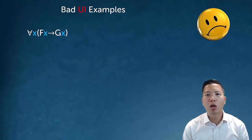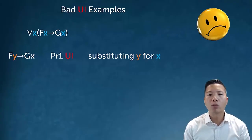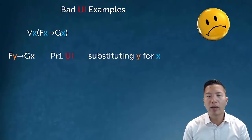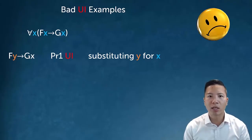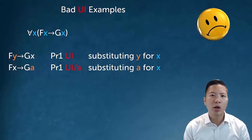Bad UI examples are more illuminating about how the rule works. From 'for all x, Fx arrow Gx,' I tried to UI and get 'Fy arrow Gy,' thinking I substituted y for x. But this is wrong because I did not substitute every single instance of x under the scope of the quantifier — I only substituted the first one and left the second. Similarly, substituting a name letter for only the second instance of x and not both is also incorrect.